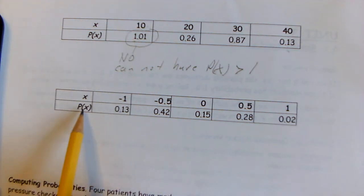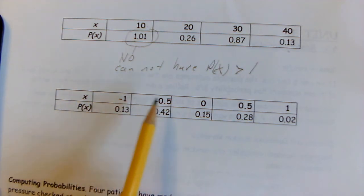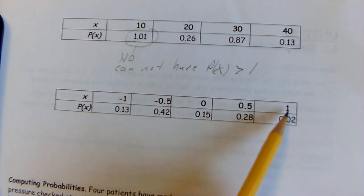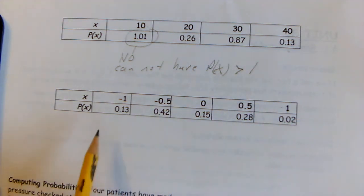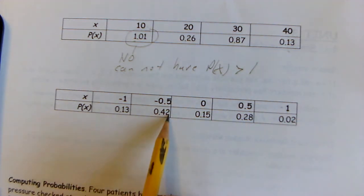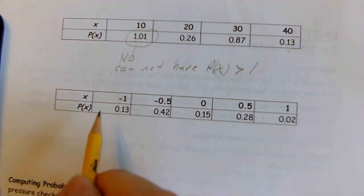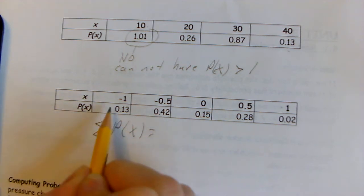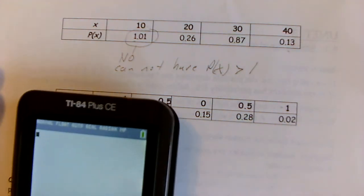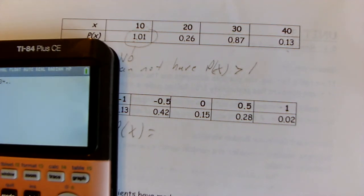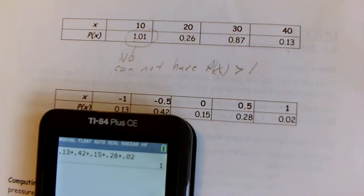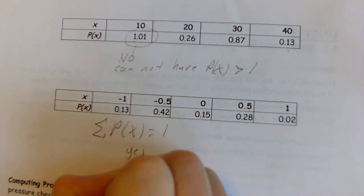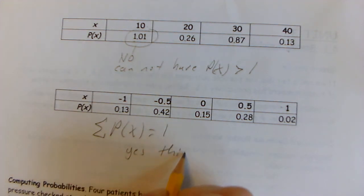Here, the random variable X takes values negative one, negative 0.5, zero, 0.5, and one. They are negative and decimal values, but that doesn't matter — they can be listed, so they're still discrete. There are no probabilities that are negative or greater than one, and the probabilities add up to one whole, so yes, this is a probability distribution.